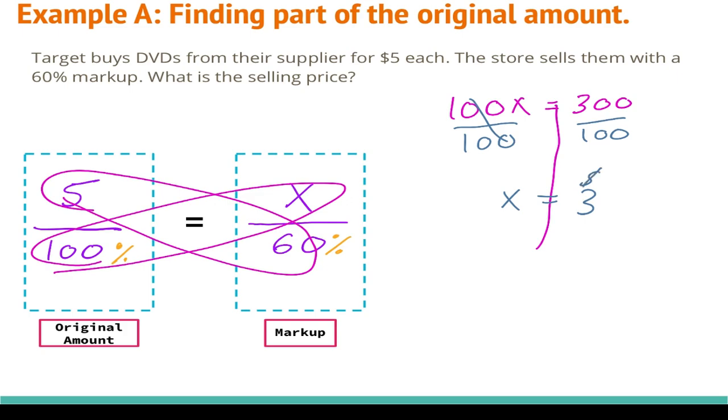Let me make sure if that is what my question is asking me for. Did I find the markup? But the question is asking what is the selling price. So I need to take my number that I got, $3, plus the original amount to find the selling price. So 5 plus 3 is equal to 8. They are selling the DVDs for $8, and that is my final price. Now let's take a look at example B.